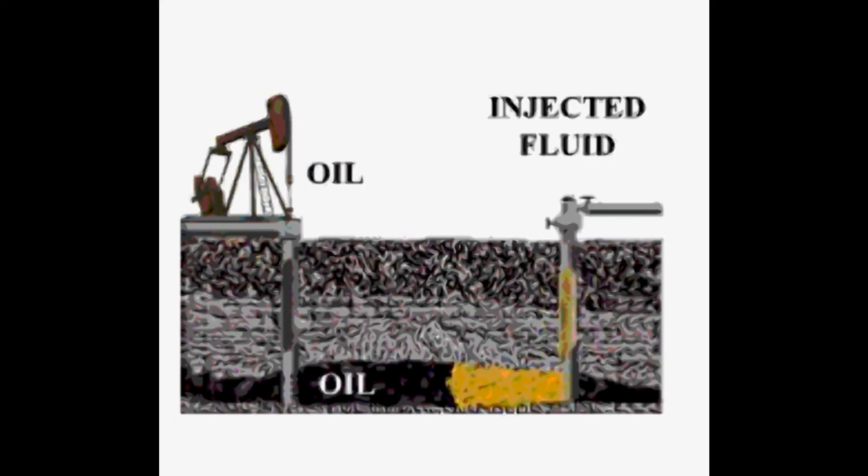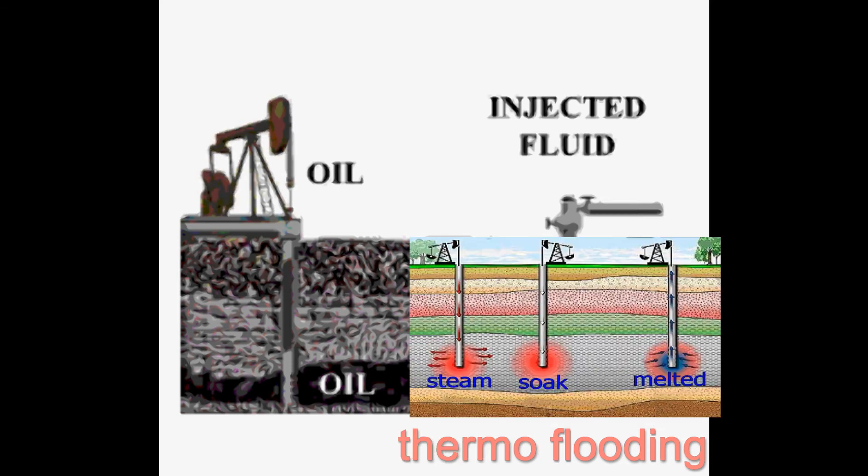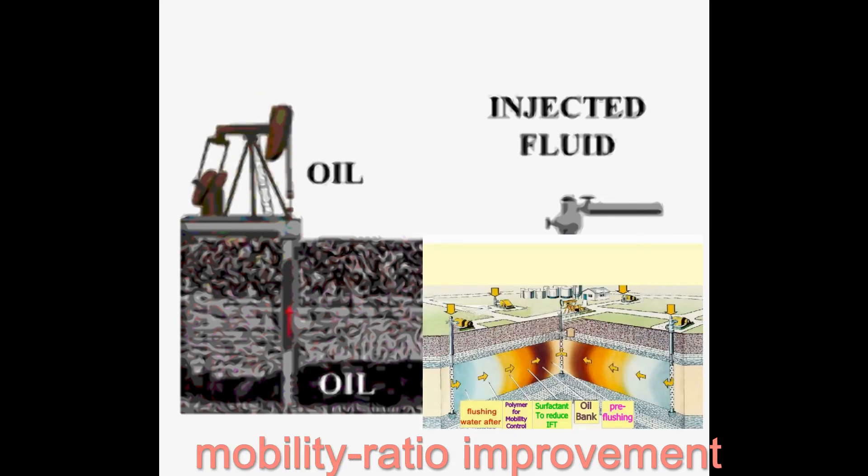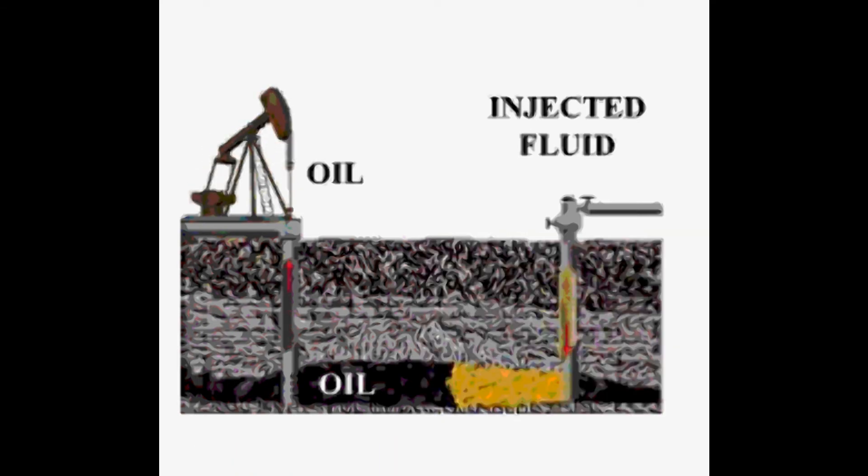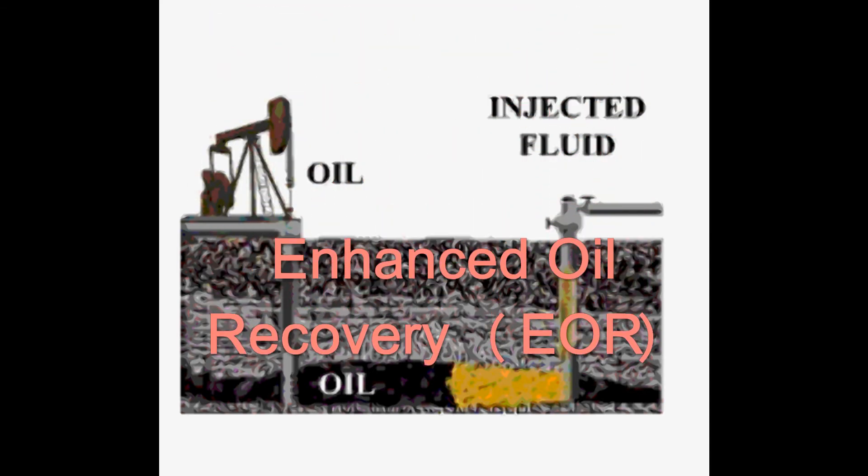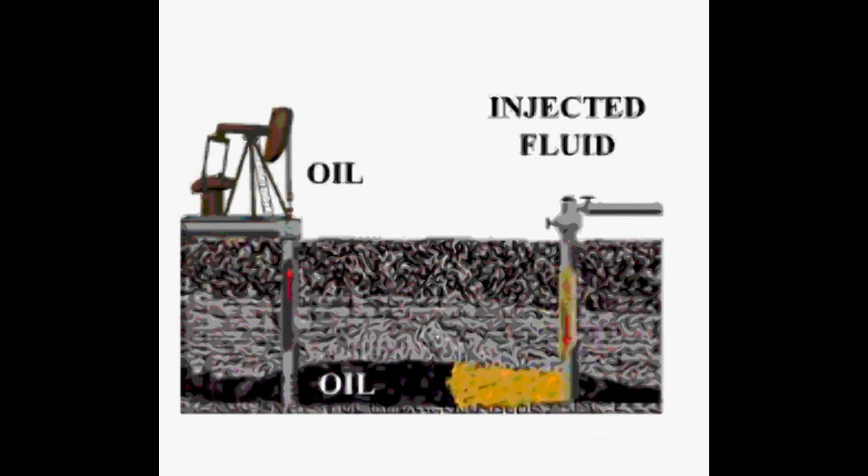There are several. Water flooding, which uses naturally occurring substances in the reservoir, and thermal flooding, miscible flooding, mobility ratio improvement, and microbial floods, which all use substances that are imported. These recoveries that rely on imported substances are referred to as Enhanced Oil Recovery, or EOR. Let's look at each in more detail.